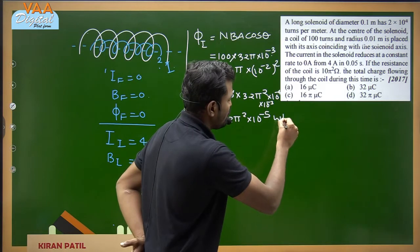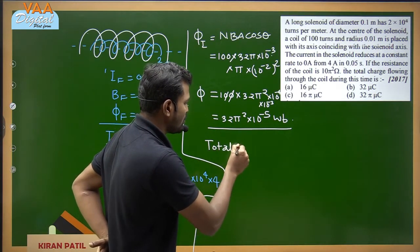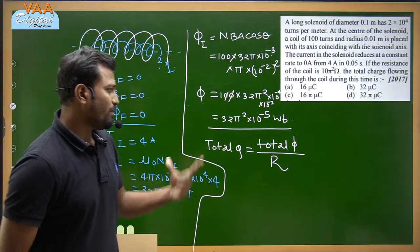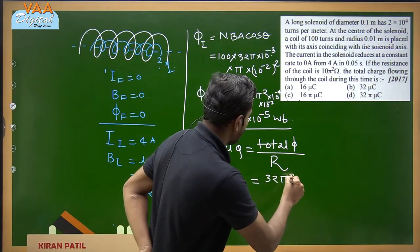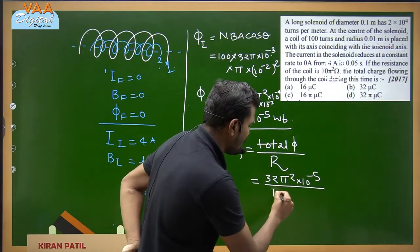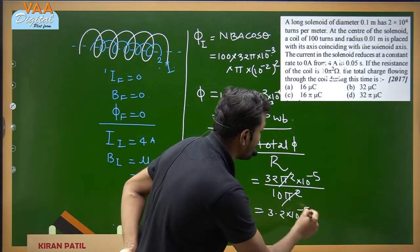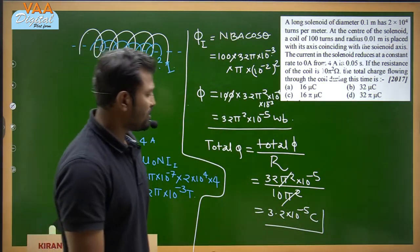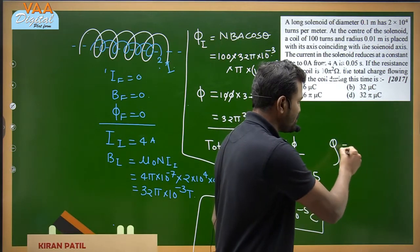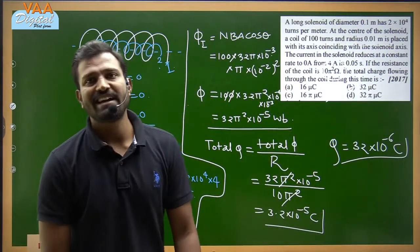Total charge Q = total flux / R = 32π²×10⁻⁵ / (10π²) = 3.2×10⁻⁶... shifting the decimal: Q = 32×10⁻⁶ Coulombs = 32 microcoulombs. That is option number two. Please pause the video and write the answer.